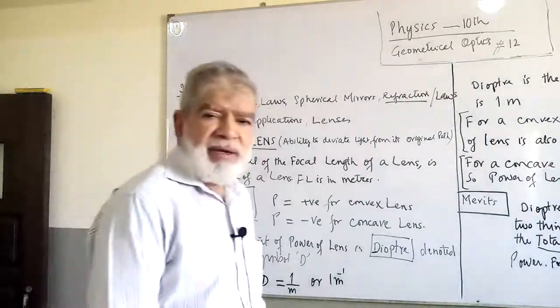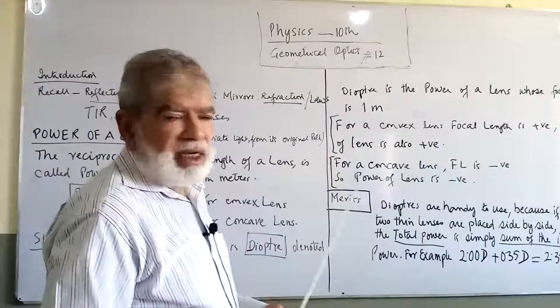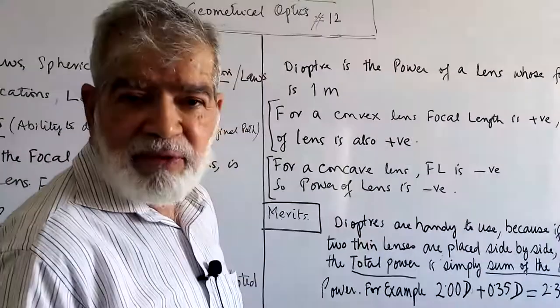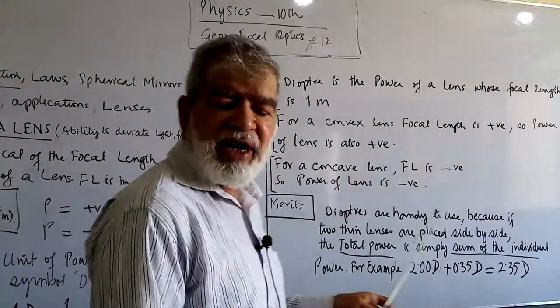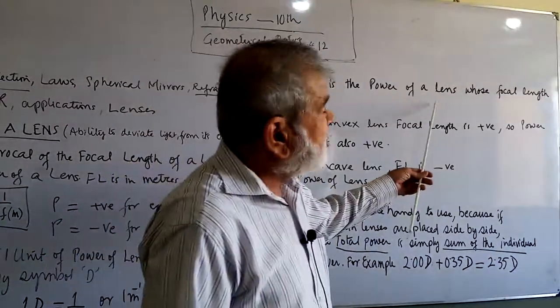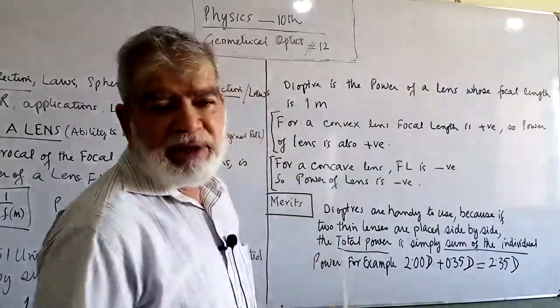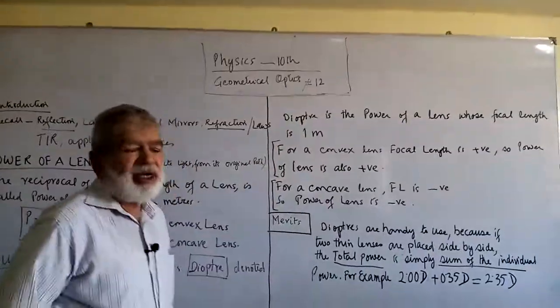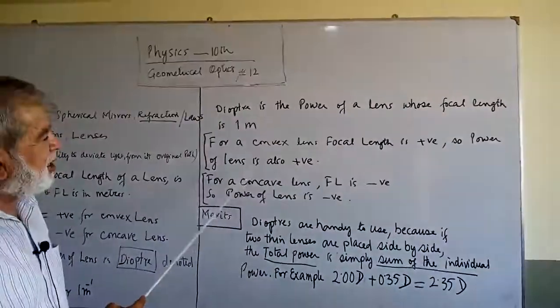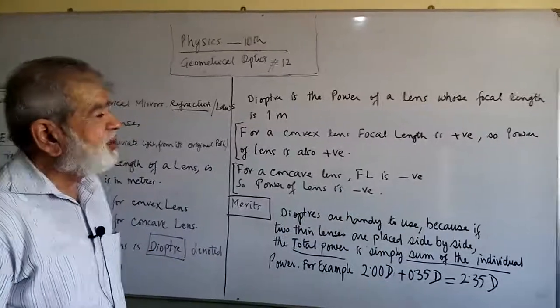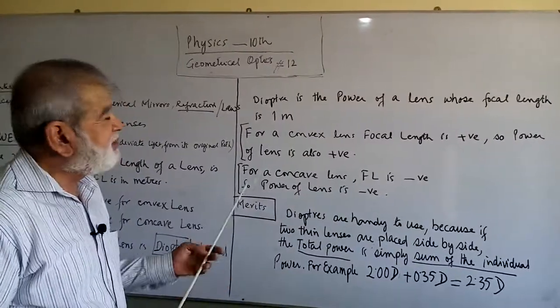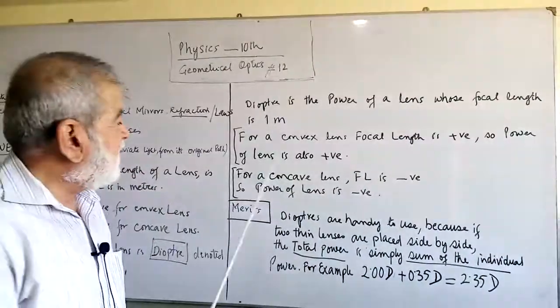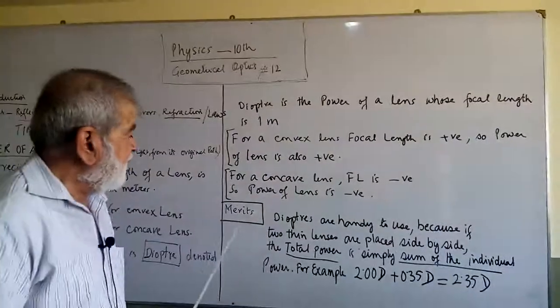The unit, the SI unit of power of a lens is diopter. One diopter is one over meter, or one per meter. It is the power of a lens whose focal length is one meter. For convex lens, the focal length is positive, so the power of the lens is also positive. For concave lens, the focal length is negative, so the power of the lens is also negative.